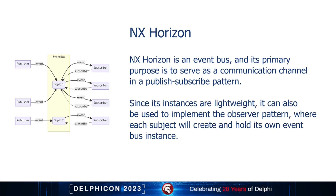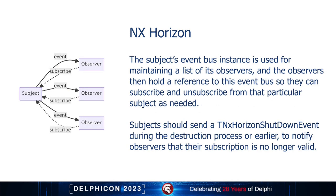NX Horizon is an event bus and its primary purpose is serving as a communication channel in a publish-subscribe pattern. Since its instances are lightweight, it can also be used to implement the observer pattern, where each subject will create and hold its own event bus instance. The subject's event bus instance is used for maintaining a list of its observers, and observers hold a reference to this event bus so they can subscribe and unsubscribe from that particular subject as needed. Subjects should send the NX Horizon shutdown event during the destruction process to notify observers that the subscription is no longer valid.